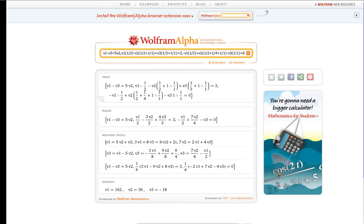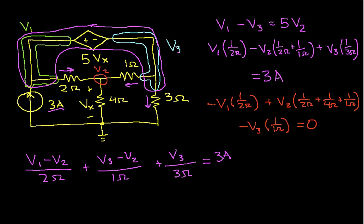So that wasn't so bad, was it? So we can go back and label these nodes then. We have V1 was 162 volts. We have V2, which is the same as Vx, equal to 36 volts, and V3 is minus 18 volts.